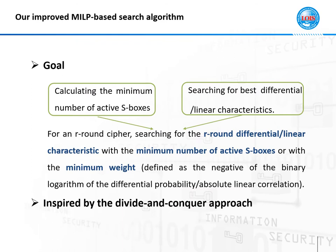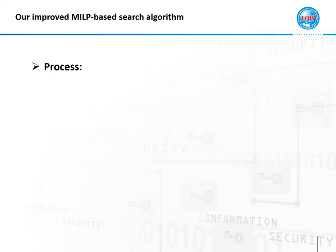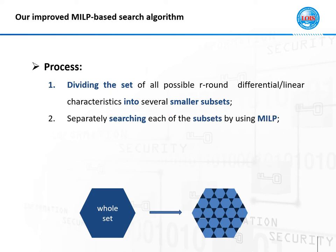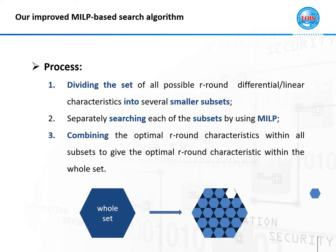The two approaches — calculating the minimum number of S-boxes and searching for best differential or linear characteristics — are respectively equivalent to searching for characteristics with the minimum number of active S-boxes and with minimum weight. Our search algorithm is inspired by the idea of divide-and-conquer. The search process is as follows: firstly, we divide the whole search space — the set of all possible R-round characteristics — into smaller subsets. Then we separately search each subset using MILP and obtain the optimal characteristics within them. Finally, the optimal characteristic within the whole set is given by combining all results returned from the subsets.